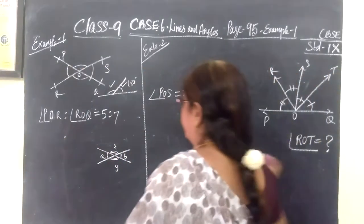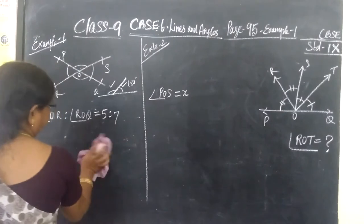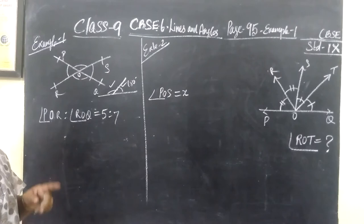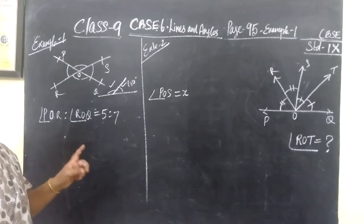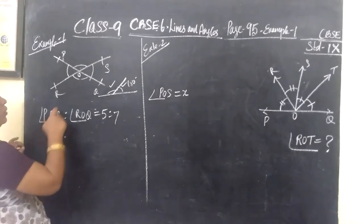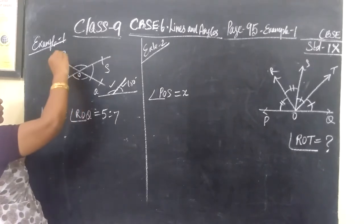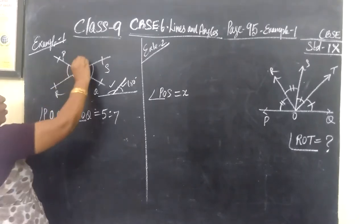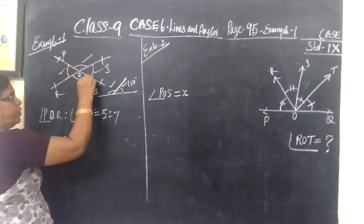Then another one: if a ray stands on a line, then the linear pair is 180 degrees. Sum of the adjacent angles is 180 degrees. Now you see here what you have to find. You have to find all the angles, all these four angles.